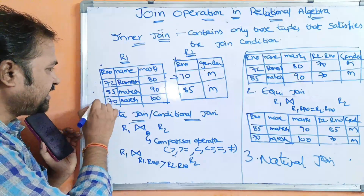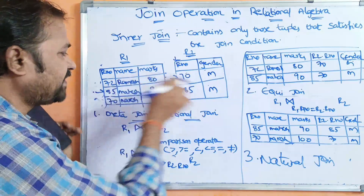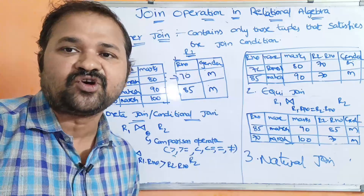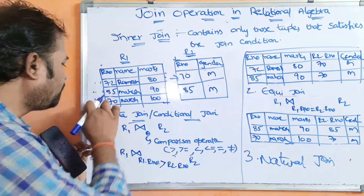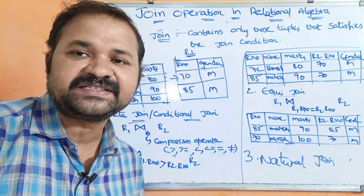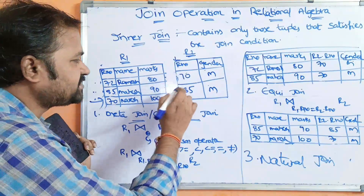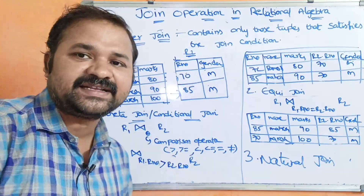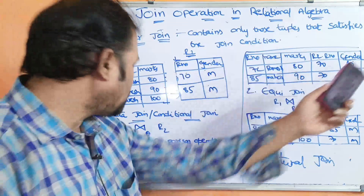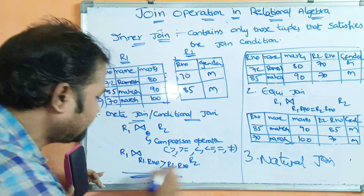Next, the third row of R1 is considered. 85 compared with 85: 85 is greater than 85 is false, so this row won't be produced. Then 70 compared with 70: 70 is greater than 70 is false, this row won't be produced. Then 70 compared with 85: 70 is greater than 85 is false, this row won't be produced. So this is the final output for theta join.